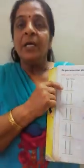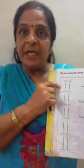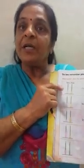Now, what is this? This is an abacus. This is the 1's place value and this is the 10's place value, and both are having the beads in different colors.